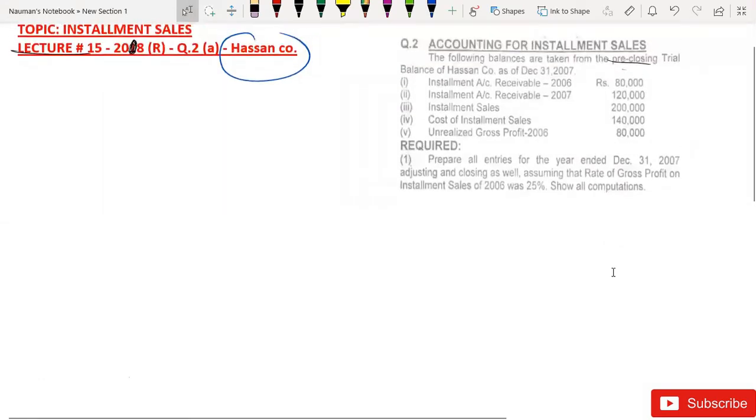The following balances are taken from the pre-closing trial balance. We have not received many questions but we have established that the examiner will assume that pre-closing trial balance. The following balances are taken from the pre-closing trial balance of Hassan company as of December 31st.